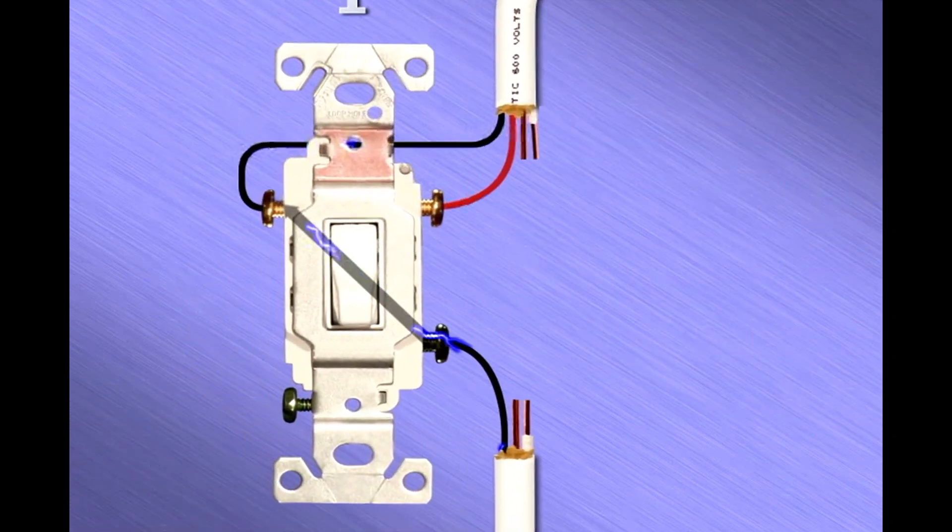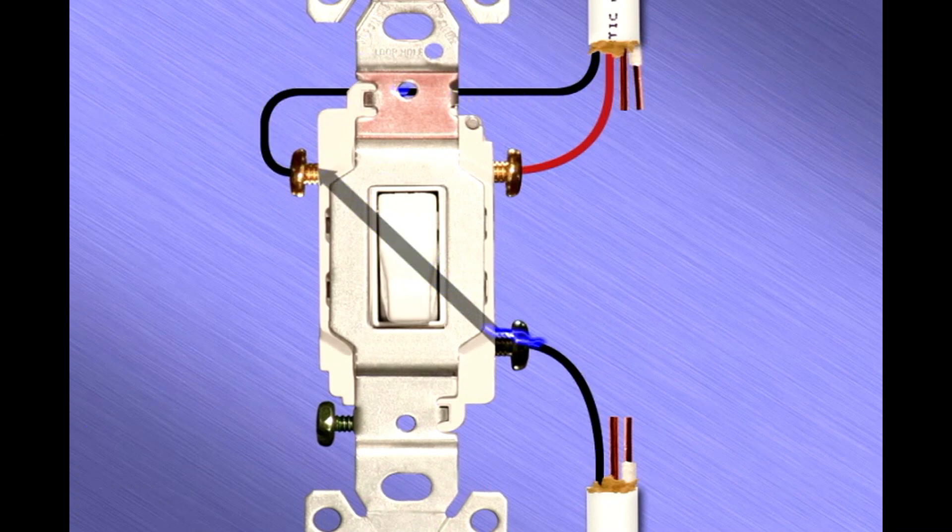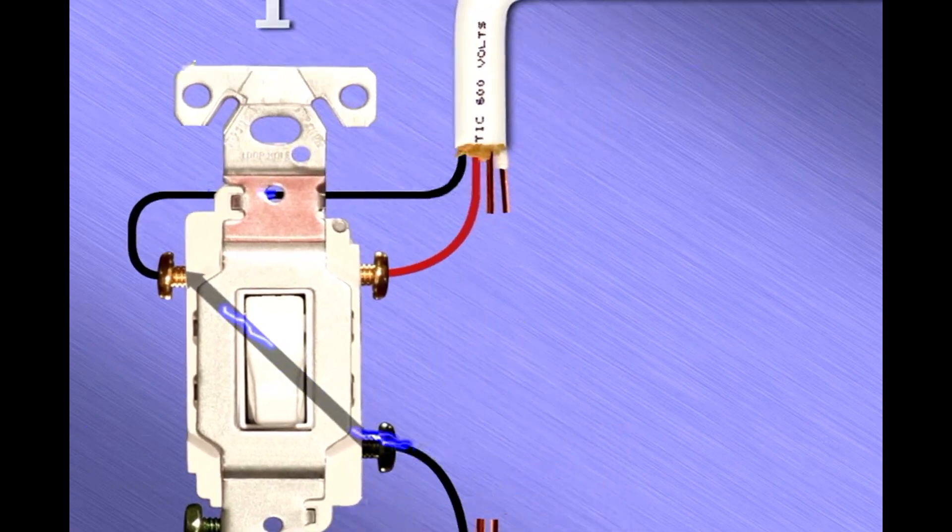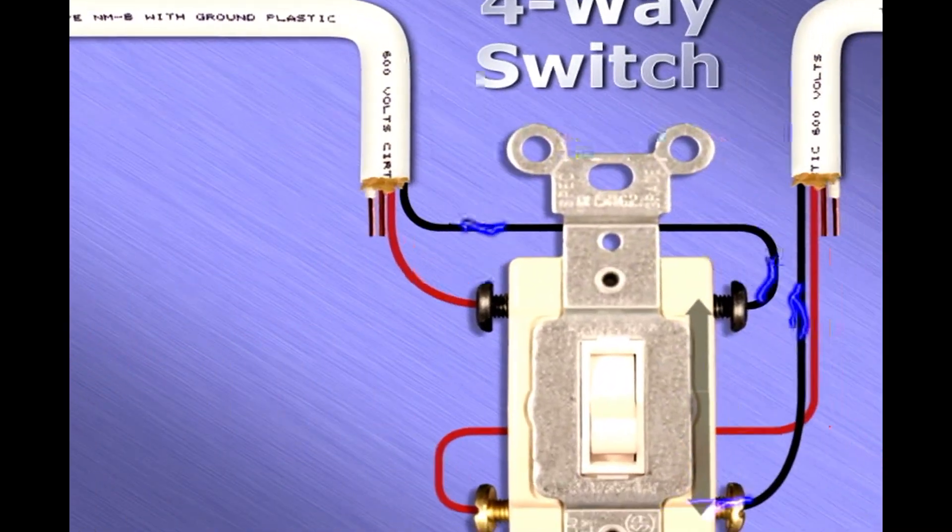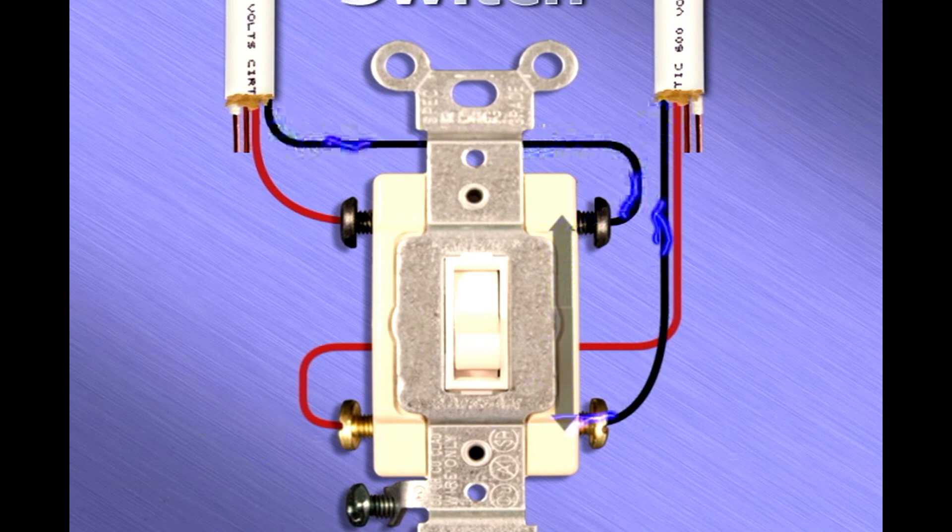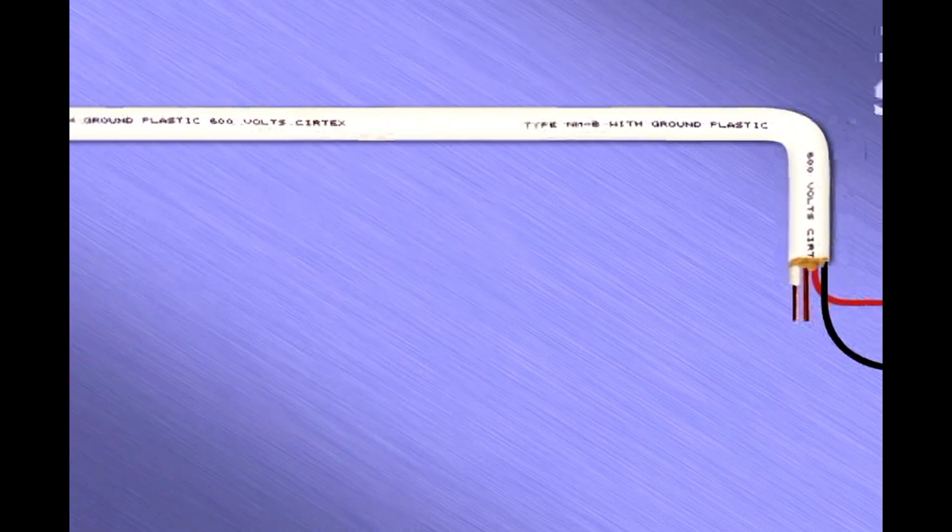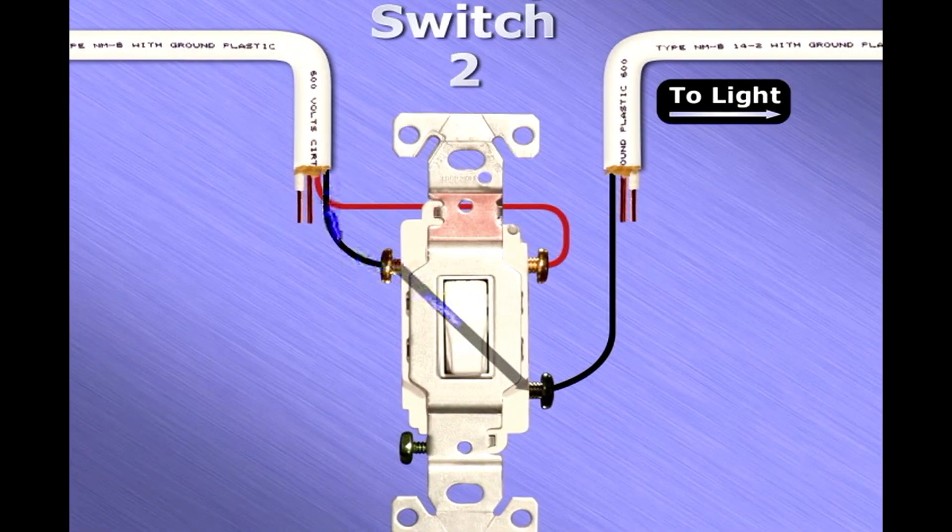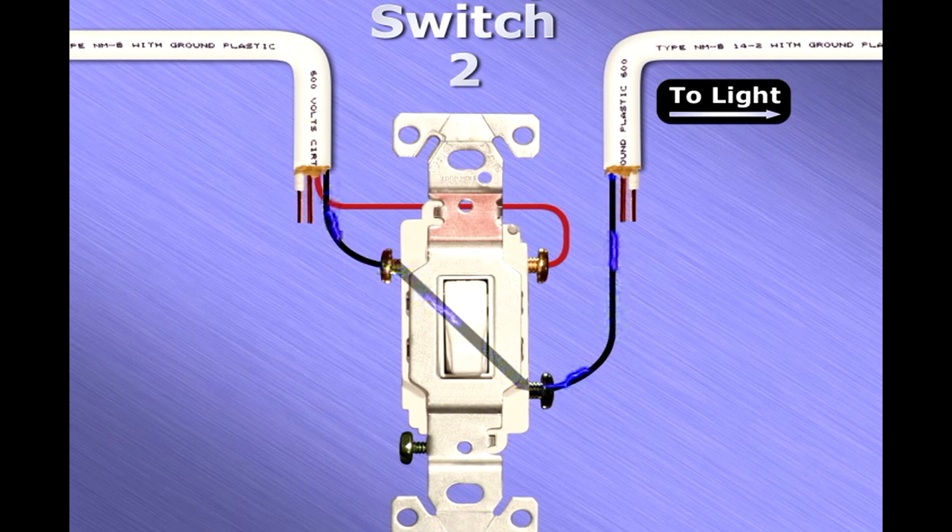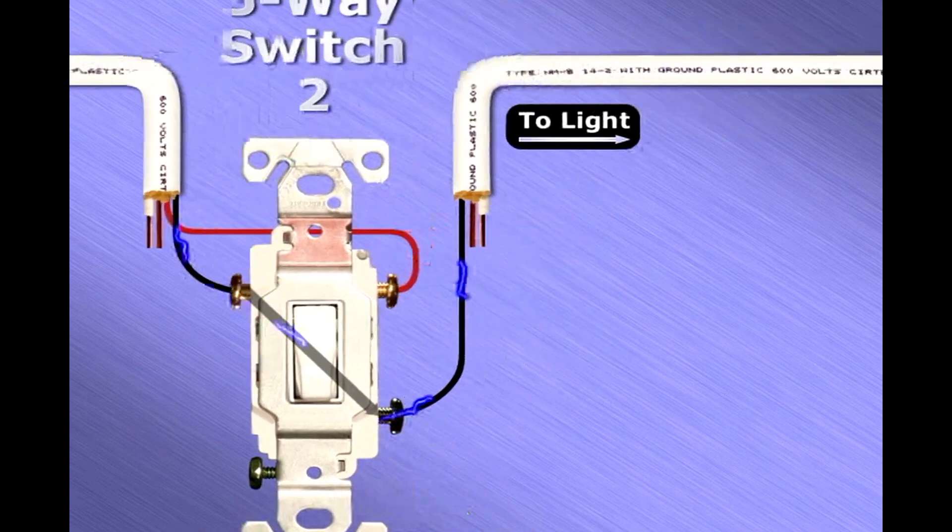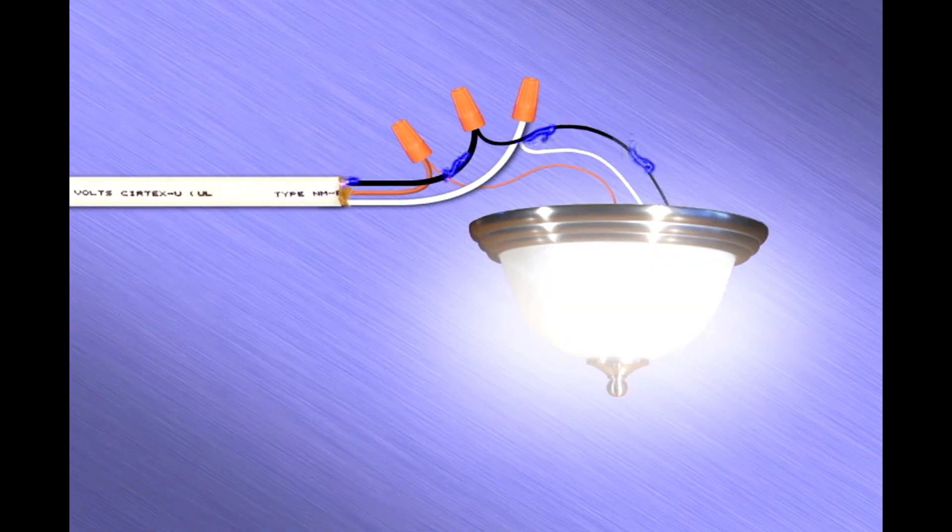Now let's see how this four way switch setup will function when electricity is flowing through the circuit. Incoming current will arrive first at the first three way switches common terminal. With the switch in the down position, the current will pass through to the left traveler terminal and travel along the black traveler wire until it reaches our four way switch. Here with the switch in the down position, the current will pass down through the switch and continue along this black traveler wire until it reaches the second three way switch. Once the current arrives here, it will pass through to the three way switch's common screw if the switch is in the down position. In this case, the current has an unobstructed path through the circuit to reach and illuminate the light.